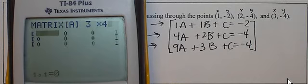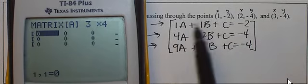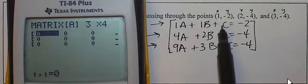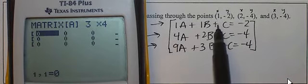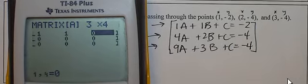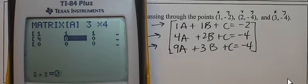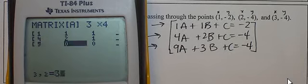3, enter, 4, enter. And now I'm going to type in 1, 1, has a coefficient of 1, so it's 1, 1, 1, negative 2. Then it is 4, 2, 1, negative 4. And 9, 3, 1, negative 4.